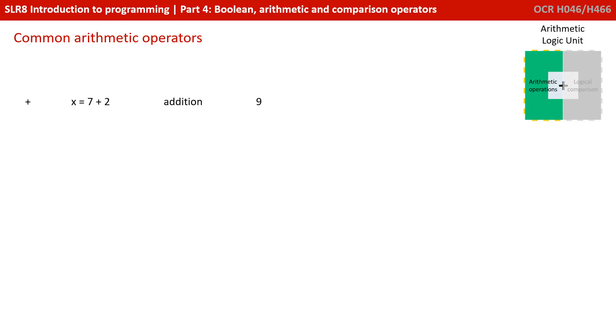We'll start with the common arithmetic operators. There's the plus symbol—for example, x equals 7 plus 2, that's addition. There's the minus or subtraction operator, x equals 7 minus 2. There's the multiplication operator. Notice here we use the star or asterisk symbol and not the letter x on the keyboard. So x equals 7 times 2. And of course, there's the division symbol, x equals 7 divided by 2, which is 3.5. We then have exponentiation, so x equals 7 to the power of 2, which would be 49.